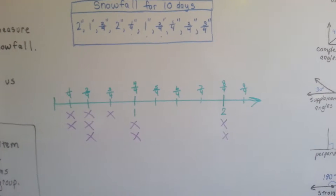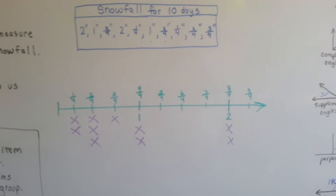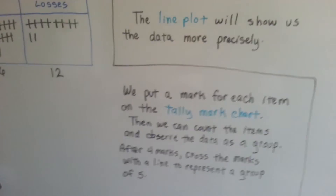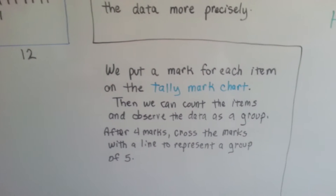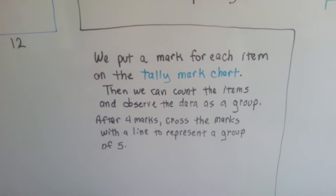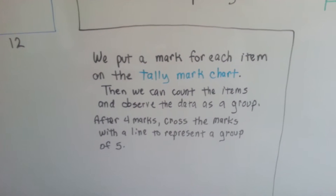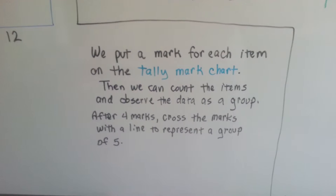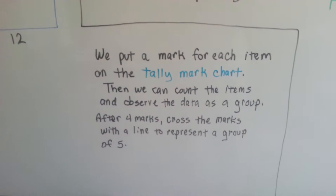We could even take this information and add up all the fractions to find out what the total snowfall was. So let's look at a tally mark chart. We put a mark for each item on the tally mark chart, then we can count the items and observe the data as a group.